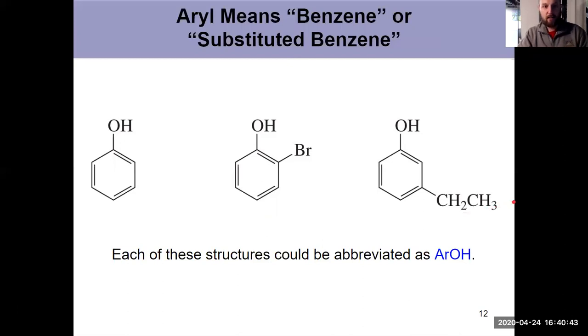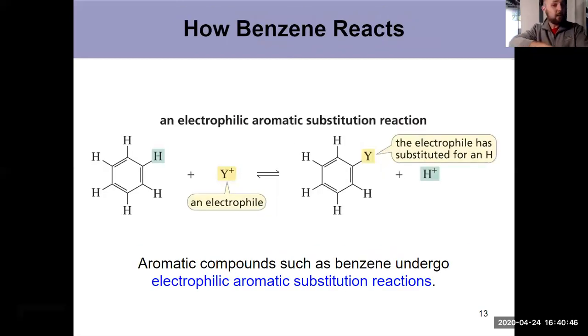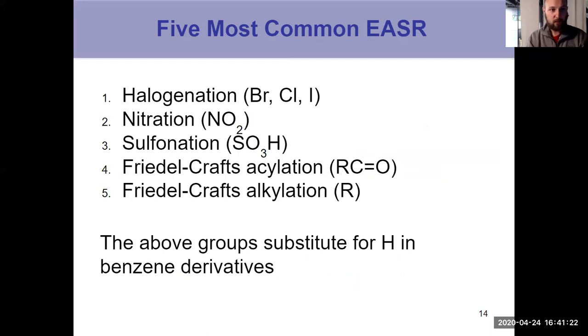So now that we know the nomenclature, how do these things react? That's the important part from this chapter. And we did introduce that in Chapter 8 as well. An electrophilic aromatic substitution reaction. That's how benzene reacts. Electrophilic aromatic substitution reaction, EASR, abbreviated that way. Take benzene. It's got a cloud of pi electrons above and below the ring. So it's not going to react with any nucleophile, but it will react with an electrophile in a substitution reaction because it wants to maintain its aromaticity. That's something we talked about last semester.